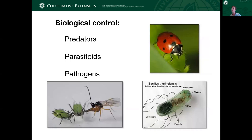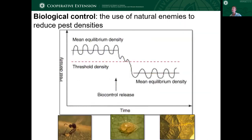Biological control — again, predators, parasitoids, and pathogens. The ladybug is an example of a predator, the parasitic wasps are another example, and then Bacillus thuringiensis, or Bt, is a common bacterial pathogen used for control, especially of caterpillar or lepidopteran pests. With biological control, we're not bringing the pest population down to zero, but it's about lowering that mean equilibrium population of the pest down below the economic injury level or threshold — enough that you can still get the crop out you want to see without too much damage.